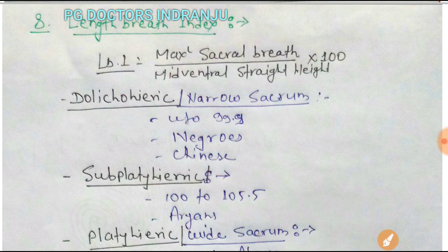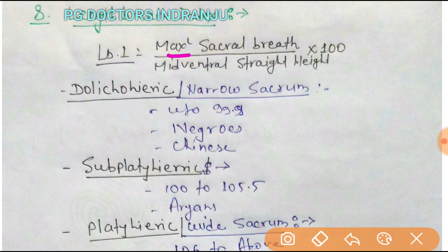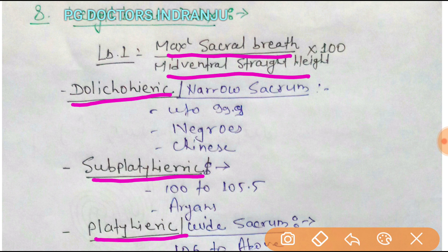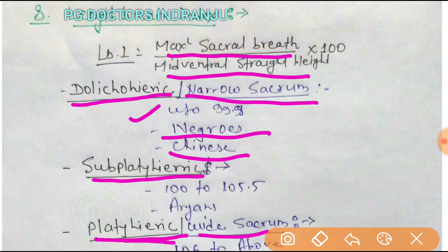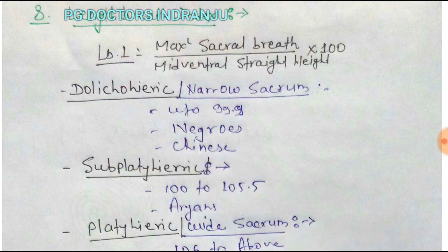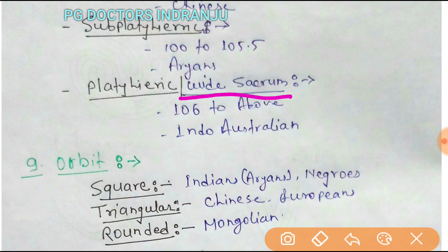Next is the length-breadth index of the sacrum. It equals maximum sacral breadth divided by the mid-ventral straight line, multiplied by 100. It is divided into Dolichohieric (narrow sacrum, up to 99.9, found in Negroes and Chinese), Sub-platyhieric (100 to 105.5, found in Aryans), and Platyhieric (broad sacrum, 106 and above, found in the Indo-Australian region).